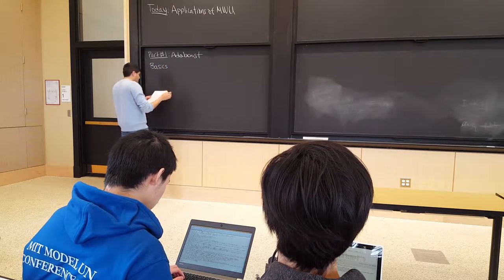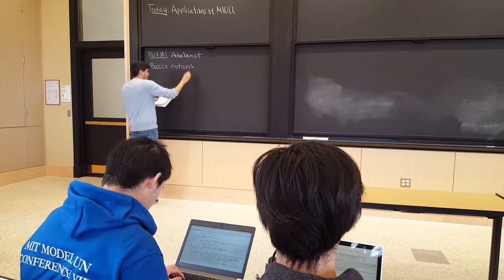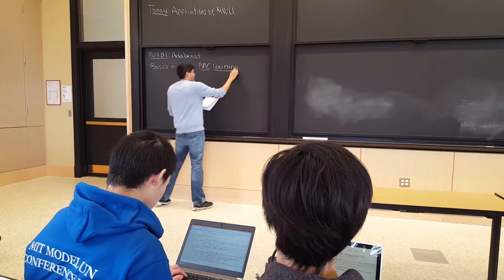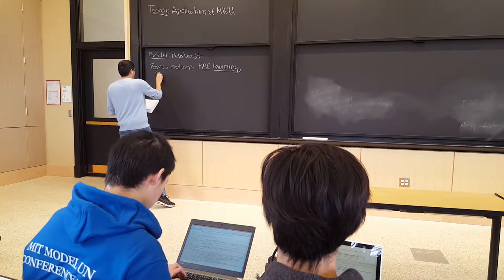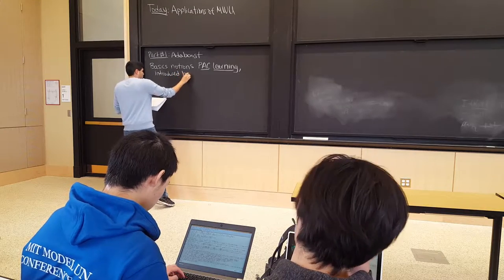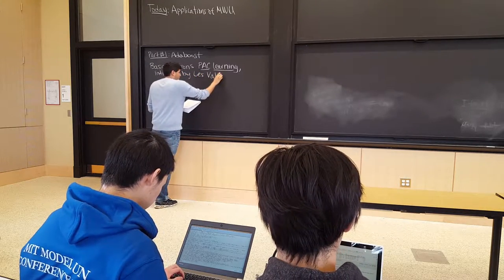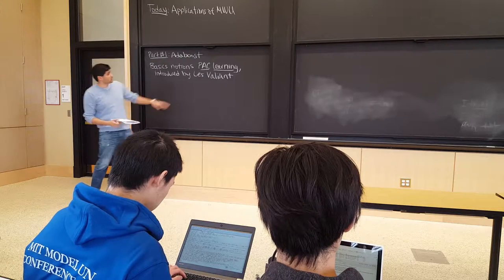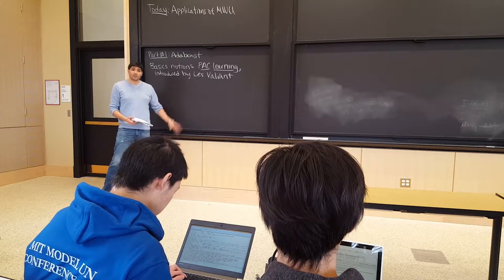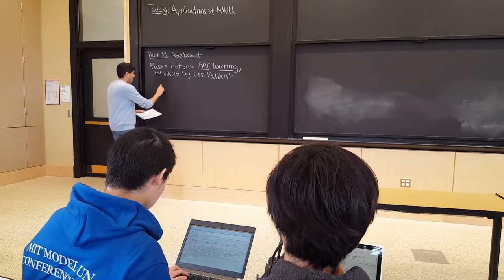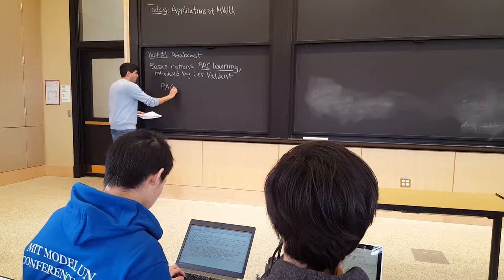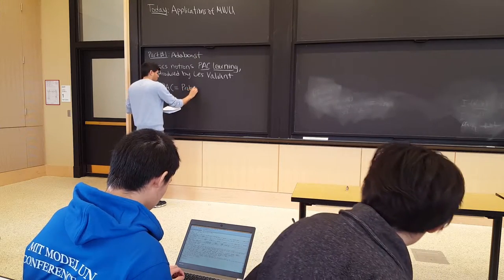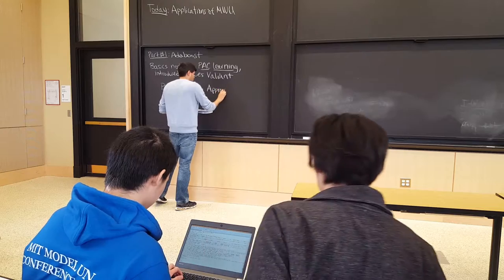We'll study the framework of PAC learning, introduced by Les Valiant about 30 years ago — Valiant won the Turing Award in large part due to this work. PAC learning stands for Probably, Approximately, Correct. The basic setting in computational learning theory is that we have some concept class H — a set of functions from domain X to labels plus one or minus one.